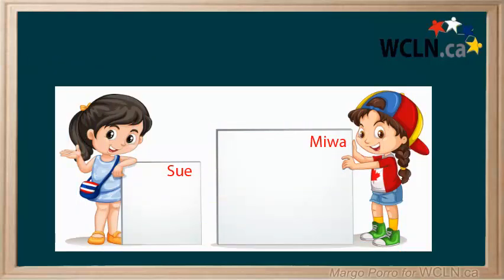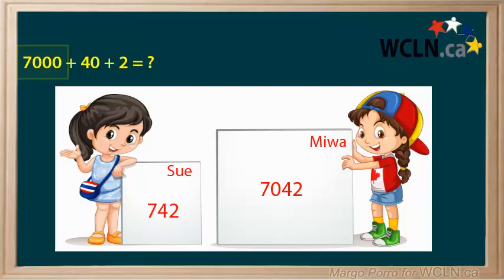Two friends are disagreeing about the standard form for 7,000 plus 40 plus 2. Sue says it's 742. Who is correct? Look for the largest place value. It is 7,000. This tells us that our number in standard form will have 4 digits.